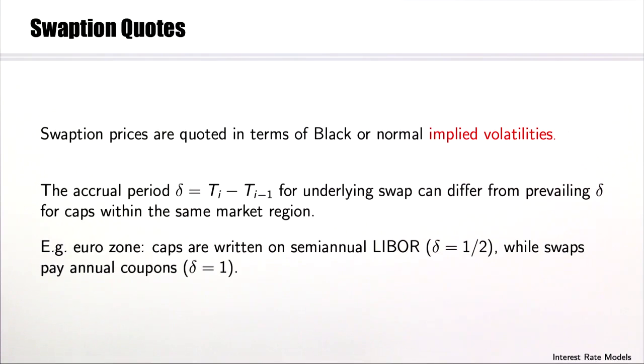Swaption prices are quoted in terms of the Black or normal implied volatilities. The accrual period delta for the underlying swap can differ from prevailing deltas for caps within the same market region. For example, in the eurozone, caps are typically written on semi-annual LIBOR where delta equals 6 months, while swaps pay annual coupons such that delta is 1.